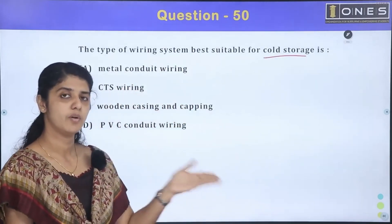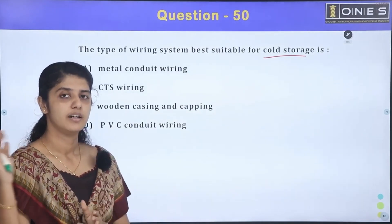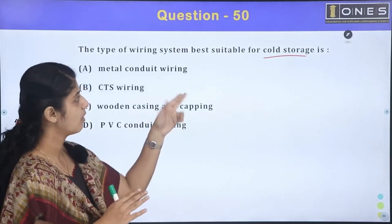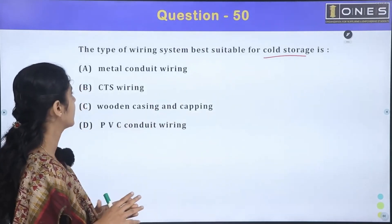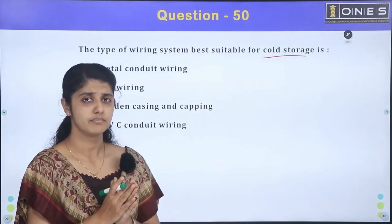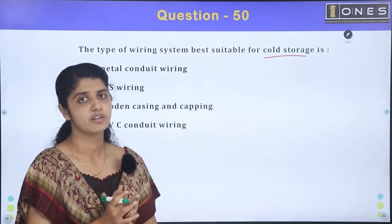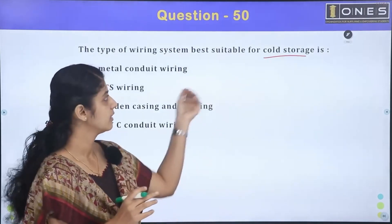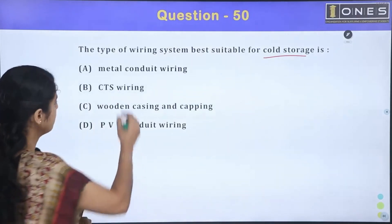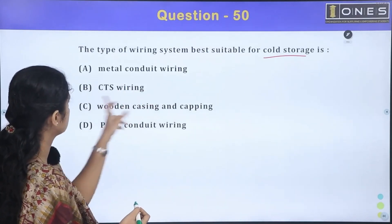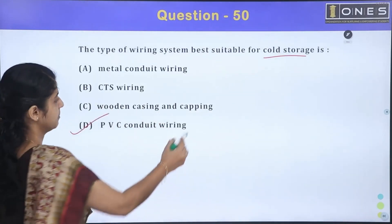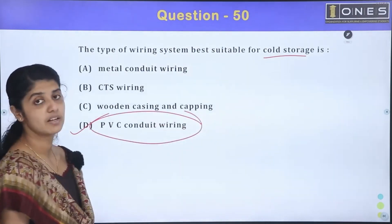This type of wiring system is best suitable for cold storage. The other wiring is the same application. If you apply it in the industry, it can be used domestically. This type of wiring is used in cold storage. You can also use cold storage. If we have some cold storage, we can use cold storage. If we have an open type of wiring, you can use metal conduit, CTS, wooden capping and casing, PVC. This is PVC conduit wiring for cold storage. This is PVC conduit wiring.